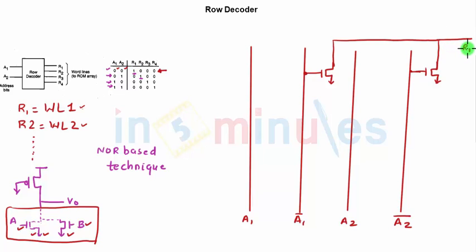We also know that it should have a pull-up PMOS, so this is my pull-up—PMOS grounded to VDD and the other terminal connected to output which is R1. Let's similarly go ahead and make it for the other case as well.